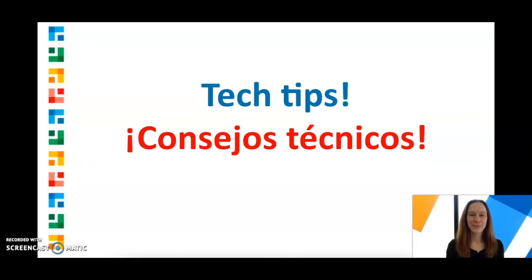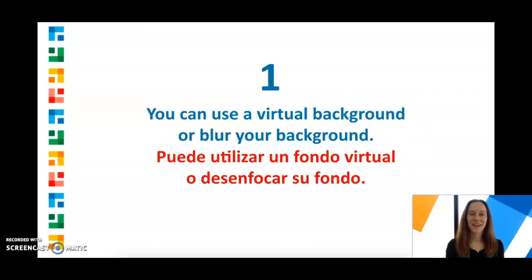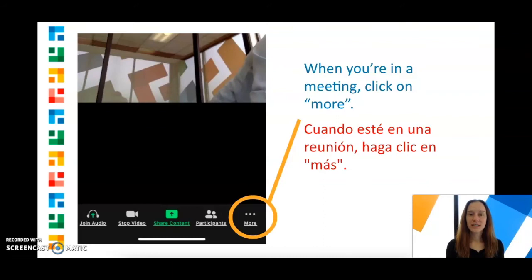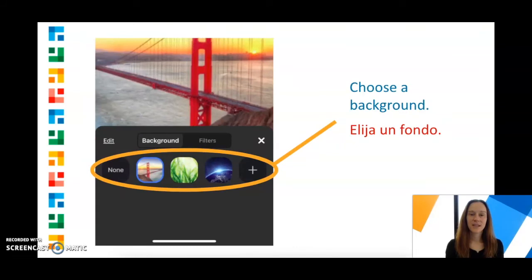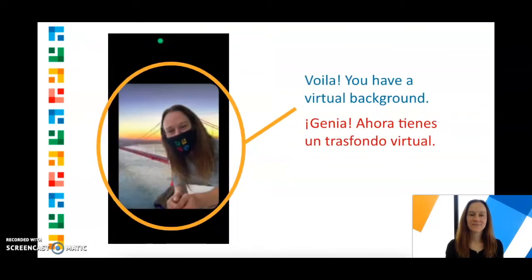Now for some tech tips that can make netiquette even easier. First, you can use a virtual background or you can blur your background. To do this, when you're in a meeting, click on More and then click on Background and Filters. Choose a background and voila — you have a virtual background.